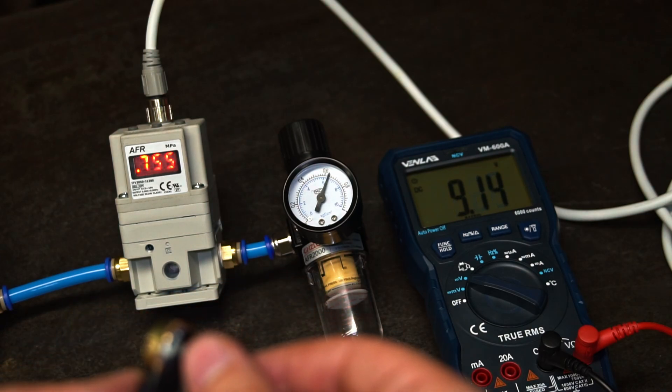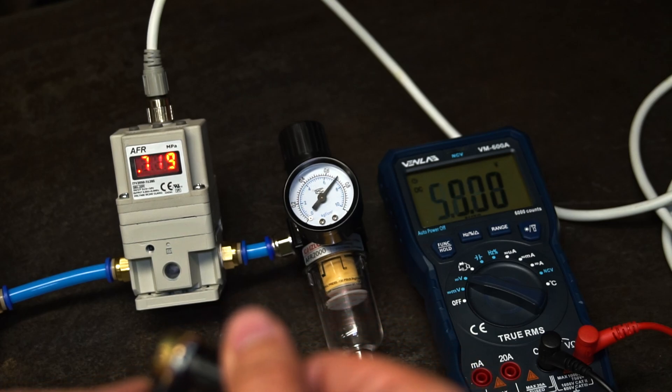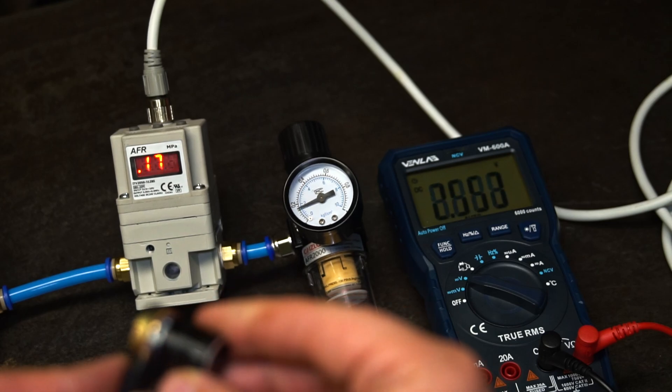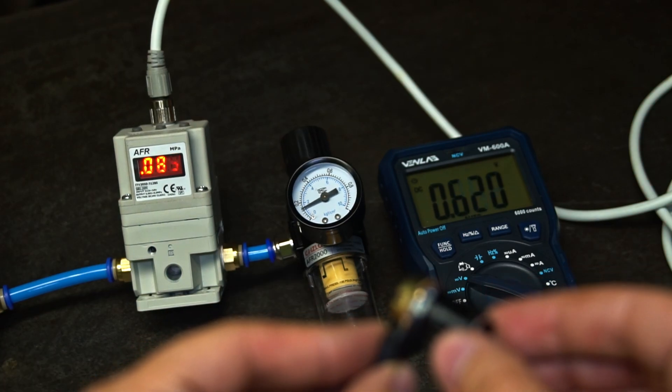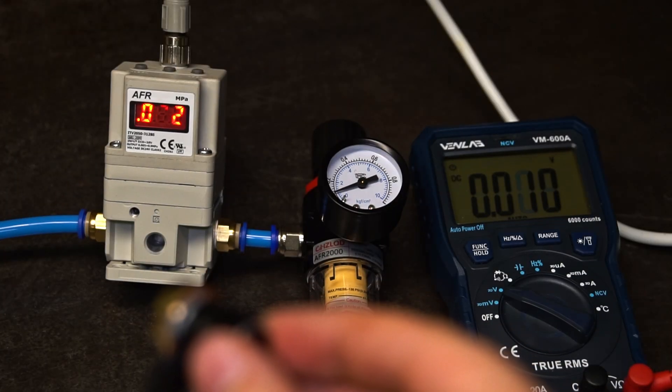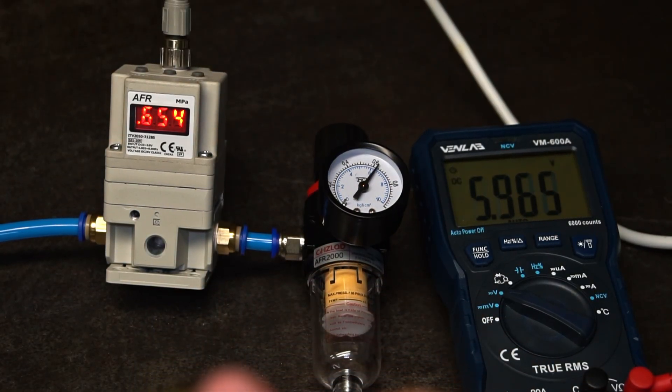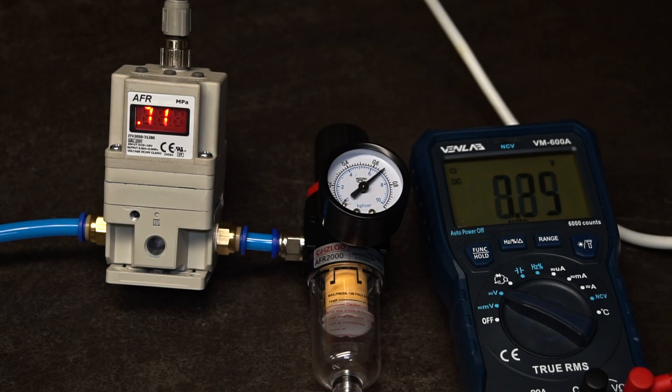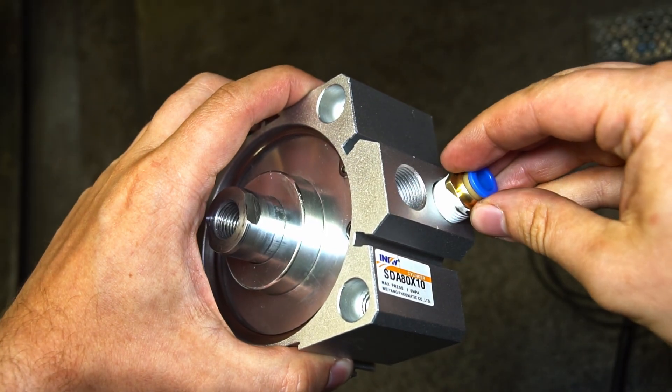At 7.6 bar at max, I guess we lose the remaining 0.4 bar somewhere between the compressor output and the regulator input. The pressure adjustment seems to be fast and accurate. If I had 10 bar on the input, I guess it would be 10 bar at 10 volts. On my settings, we get about 1 bar per 1 volt. I think we are ready for the air cylinder.